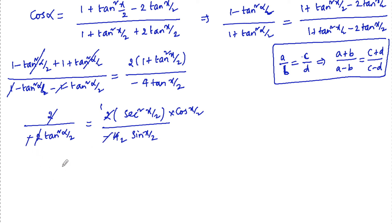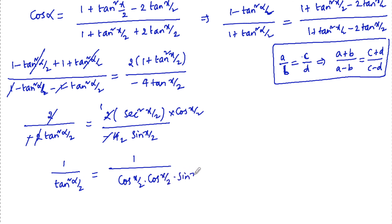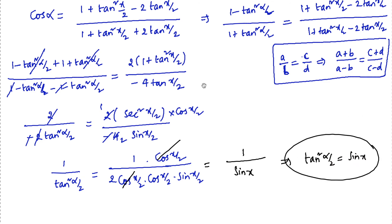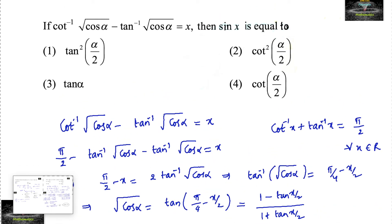So 1/tan²(α/2) equals sec²(x/2) divided by (2·sin(x/2)·cos(x/2)), and since 2·sin(x/2)·cos(x/2) equals sin x, by taking the reciprocal we get tan²(α/2) equals sin x. Hence sin x equals tan²(α/2), which is the first option.